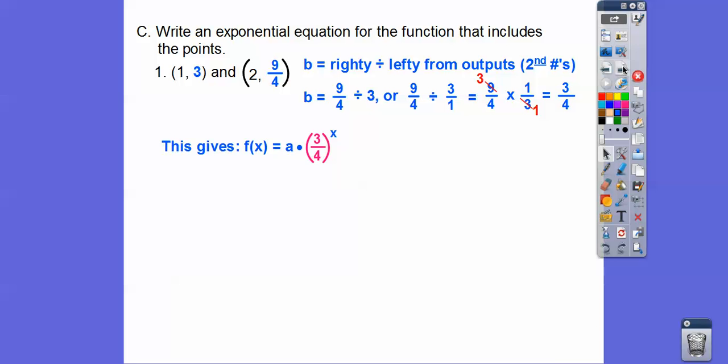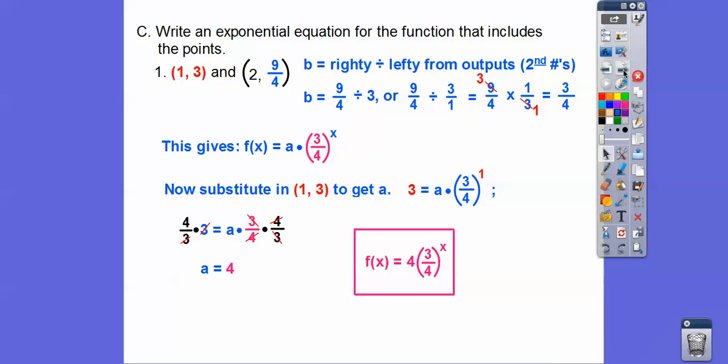And then so, so here's our equation so far. Now we're just going to substitute in either one of the points. Which one would you rather substitute in, that one or that one? Totally, this one. So this is y, that goes right here. And this is x, that's going to go right there. So if we substitute that in, then we get 3 equals a times 3 fourths to the 1 power. And then multiply both sides by the reciprocal, and we get a equals 4. So there's our equation right there. Easy enough.